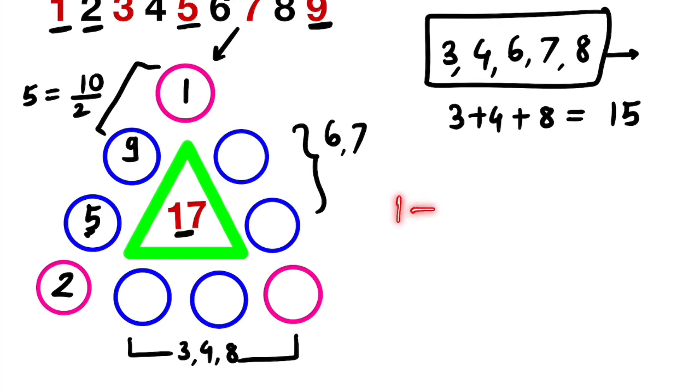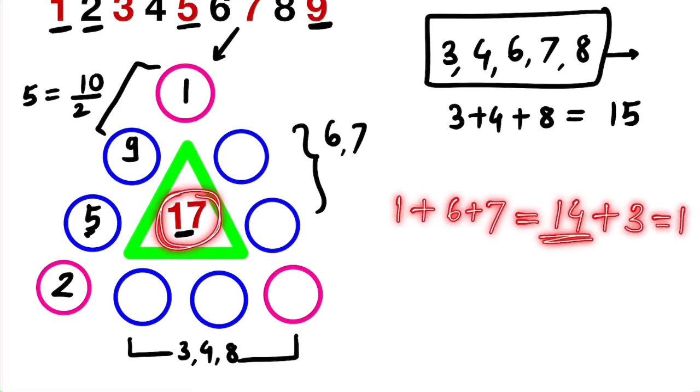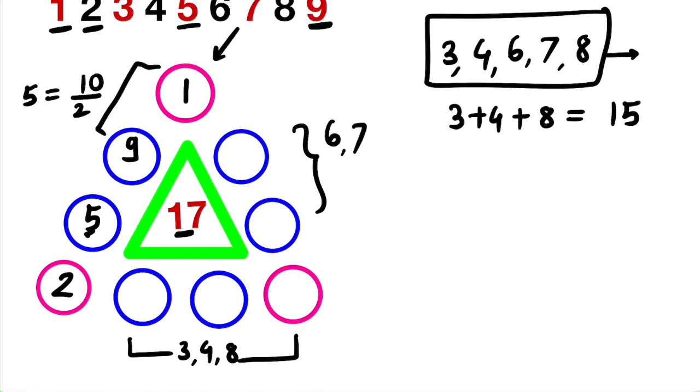That is equal to 14, but we want the sum as 17. So 14 plus 3 is 17, and therefore we must have 3 over here. So let us put this 3 here. Now let us fill the remaining blanks. Let us put 6, 7 over here.